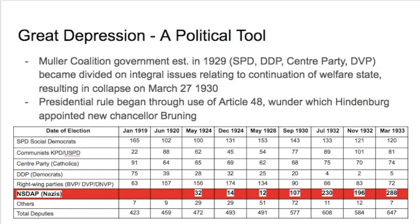The Great Depression hits, and obviously hits the Weimar Republic hardest. The Mueller Coalition, established in 1929 as a coalition of four parties, became divided on integral issues regarding the continuation of the welfare state — providing social benefits during the Great Depression when people need it most, but also when the government needs money to prop up what remains of Germany. Presidential rule began to take over through the use of Article 48, which Hindenburg used to appoint the new Chancellor Brüning, ruling by presidential decree, giving him emergency powers to pass laws without the support of the Reichstag.